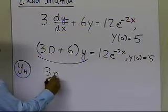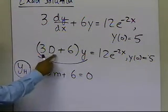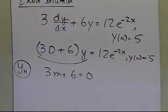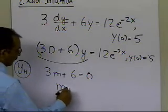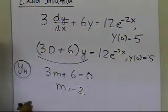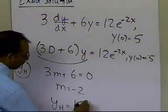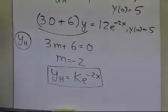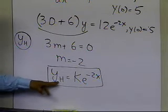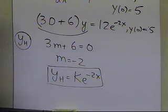The characteristic equation is 3m + 6 = 0, which gives me m = −2. So the homogeneous part of the solution is k·e to the power minus 2x. This means that if I plug this homogeneous part into the differential equation, I'll get 0 as the solution.